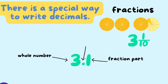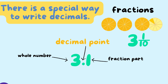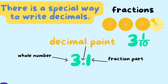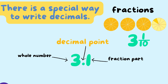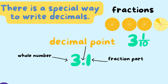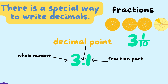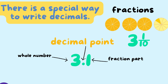So, how do you know a decimal? Decimals have different parts, but the really important part of a decimal is what they call a decimal point. That's how you know that the number is a decimal number. You might also see whole numbers, or you might see fraction parts. The fraction parts are written after the decimal point, and the whole numbers are written before the decimal point.